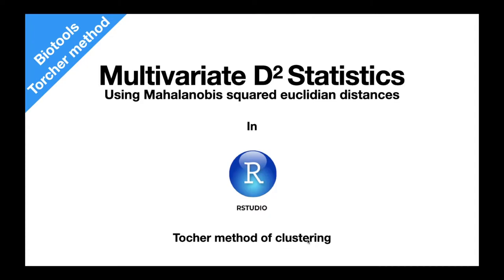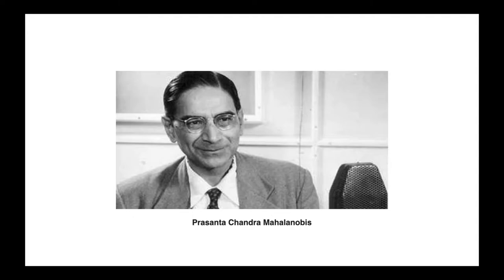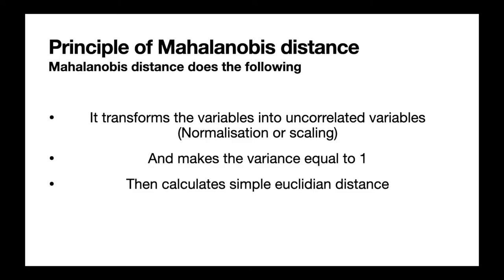In this tutorial, we will discuss multivariate D-square statistics, originally proposed in 1928 by Prashant Chandra Mahalanobis, known as the father of Indian statistics. Mahalanobis distance is one of the most widely used metrics to find how much a point diverges from a distribution based on measurements in multiple dimensions. The principle transforms variables into uncorrelated variables, a form of normalization or scaling.